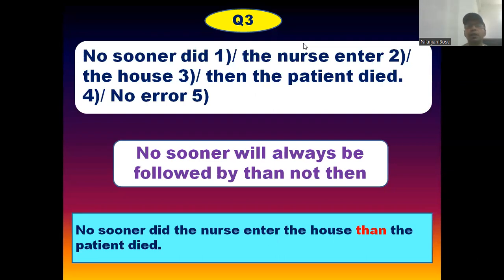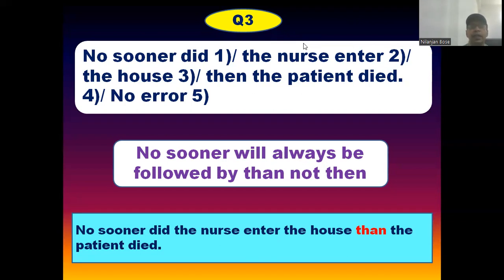In question number three: 'No sooner did the nurse enter the house than the patient died.' I have found this question a number of times in competitive examinations, so it is a very important rule. 'No sooner' will always be followed by 'than,' not by 'then.' If in an examination the question is started by 'no sooner,' then it will definitely be followed by 'than.' As you see in this particular question, in section four it is written 'then,' which is absolutely wrong because the sentence has already been started by 'no sooner.' The correct answer will be: no sooner did the nurse enter the house than the patient died.